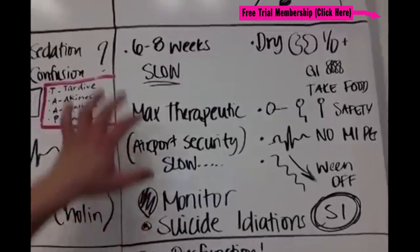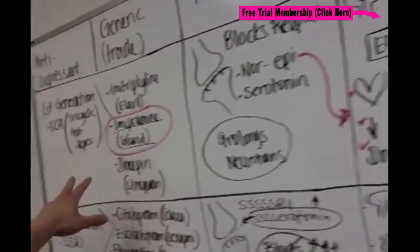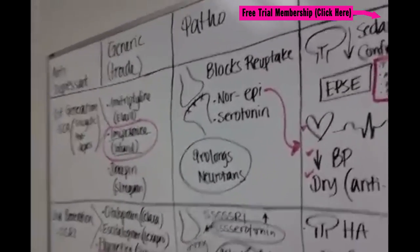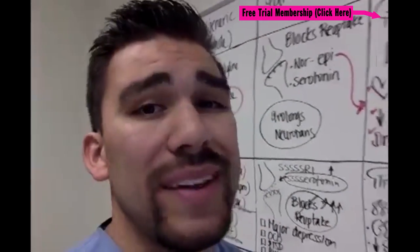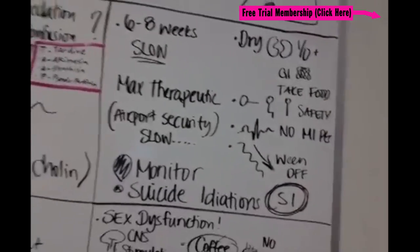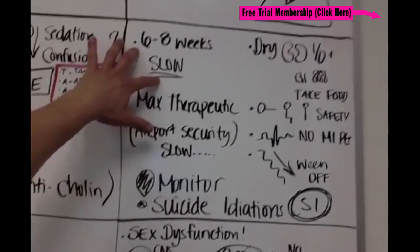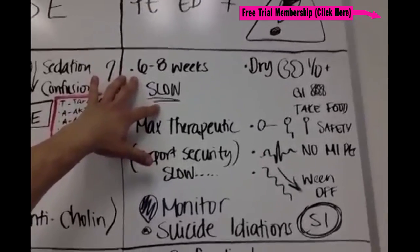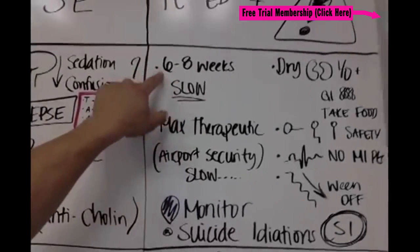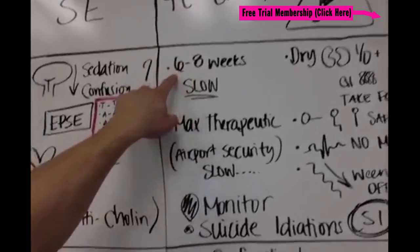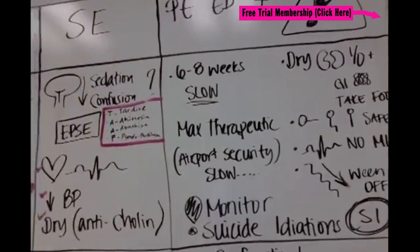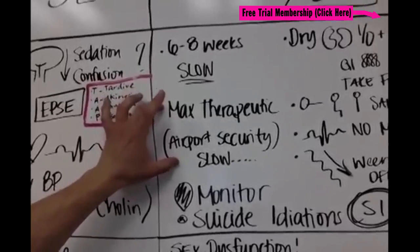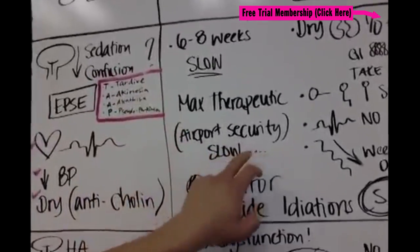For patient education, remember the TCA is just like TSA airport security — very slow, long, and drawn out. It takes six to eight weeks to reach maximum therapeutic levels. Some books say two to four weeks, but two out of three NCLEX books I use said six to eight weeks, so depending on your instructor. The key takeaway: it's very slow for therapeutic range, just like airport security.